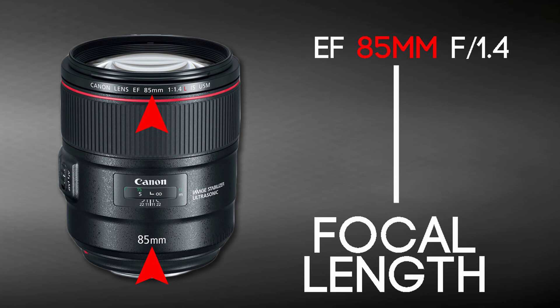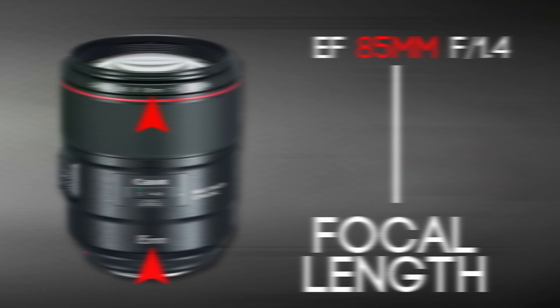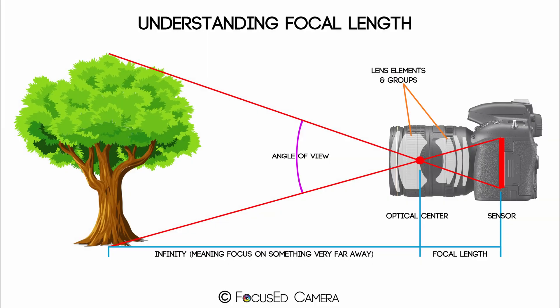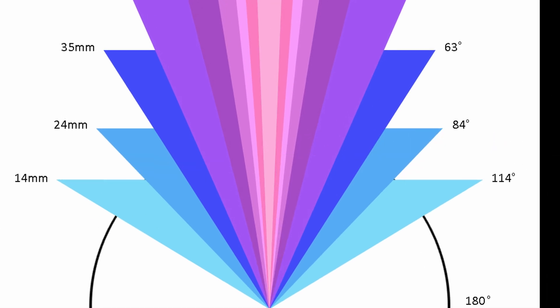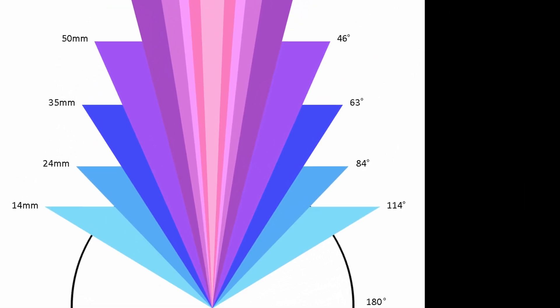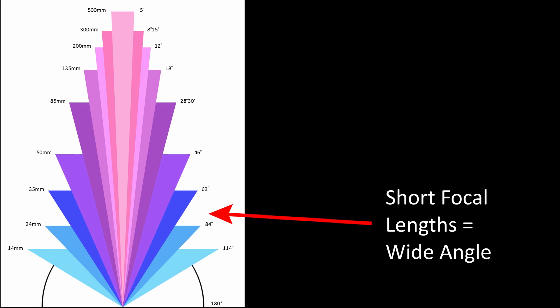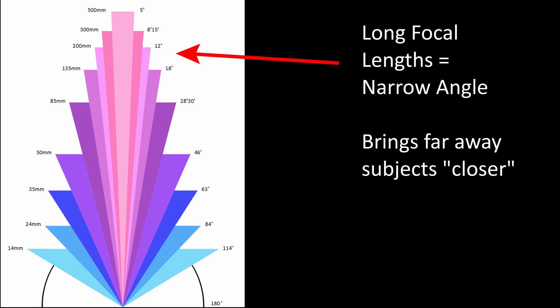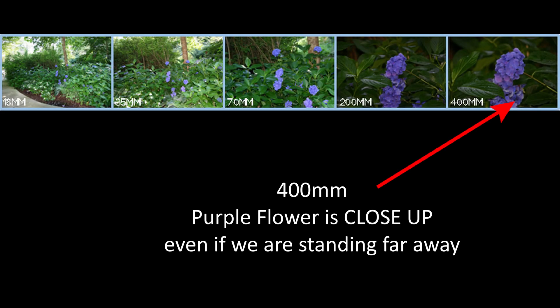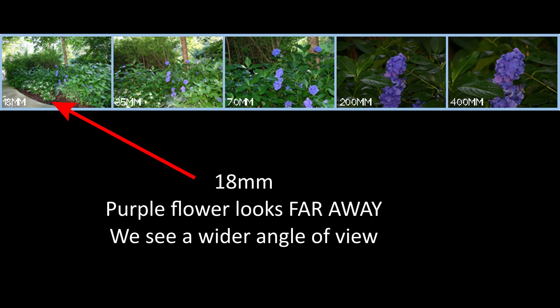The next set of letters and numbers we need to understand is the focal length, measured in millimeters. This number is the distance between the camera's sensor and the lens's convergence point, or focus point — not the actual measurement of the length of the lens itself. The focal length tells us how much of our scene will be captured, basically our angle of view. Shorter focal lengths have a wider angle of view, whereas longer focal lengths have a smaller angle of view and a higher level of magnification. A 400mm lens will bring a smaller area of the scene closer to you than an 18mm lens.